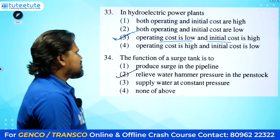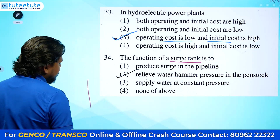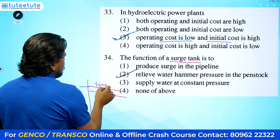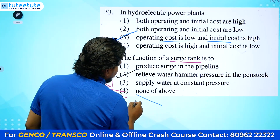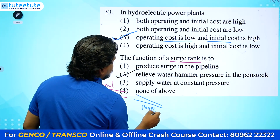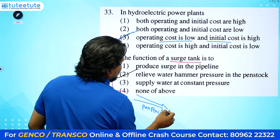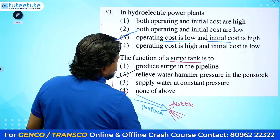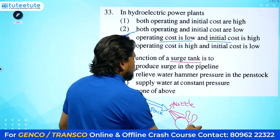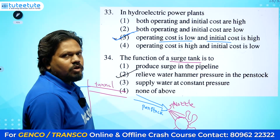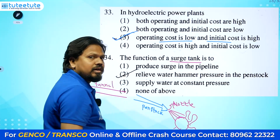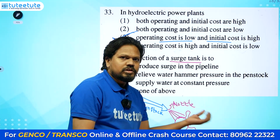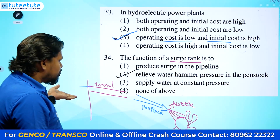The function of a surge tank: from the dam, a tunnel leads to a penstock which increases and varies pressure, ending in a nozzle. Below the nozzle is the water turbine. If more electrical load is demanded, more water must flow. The powerhouse is located 2-3 kilometers away from the dam, so sudden load changes cannot be met instantly from the dam.